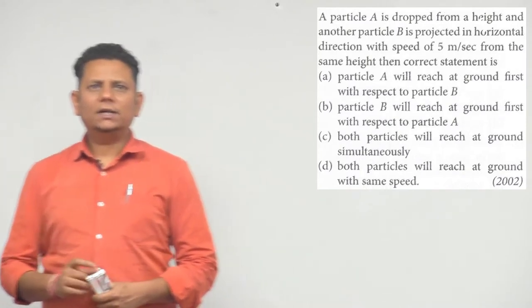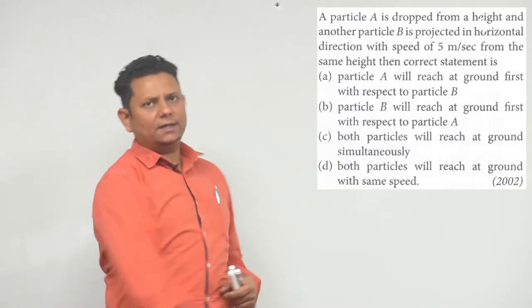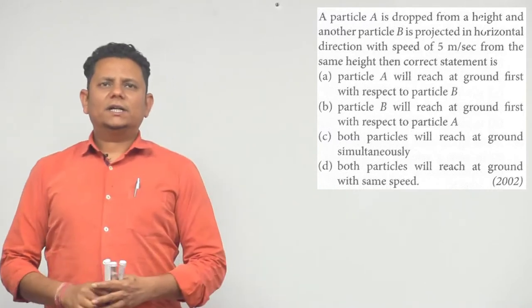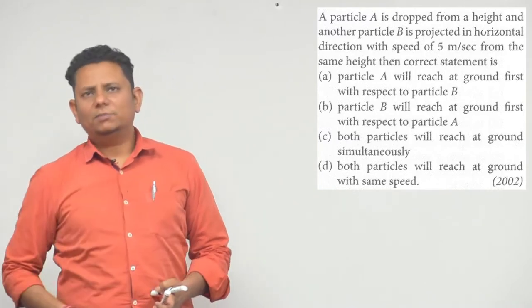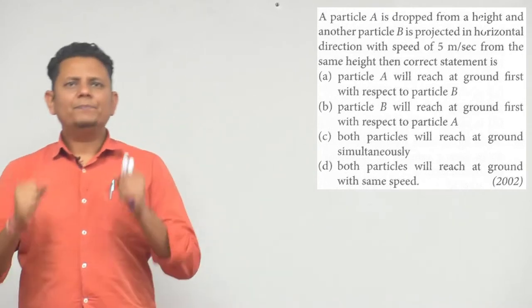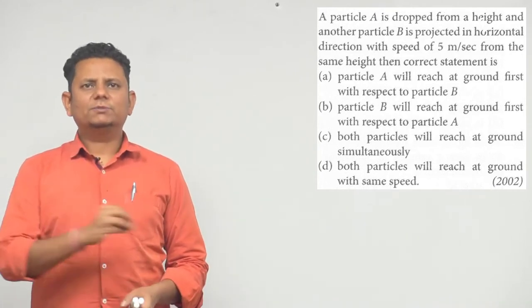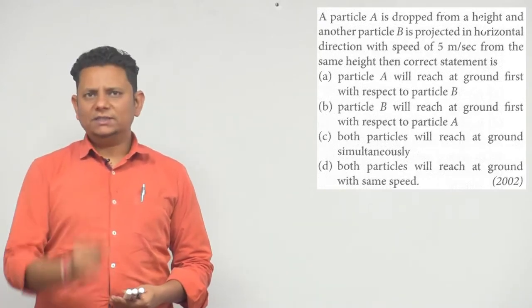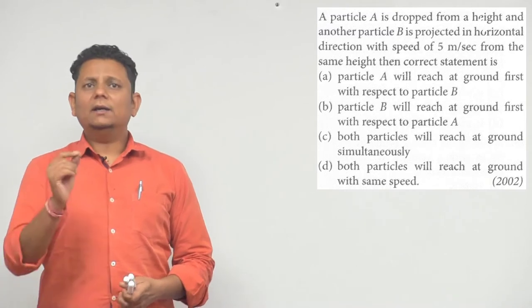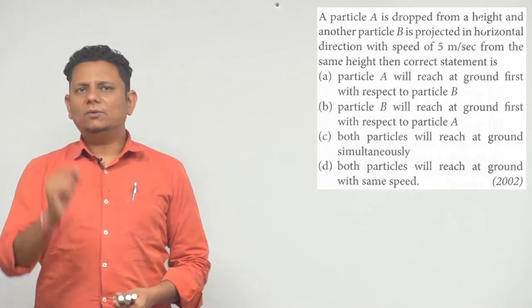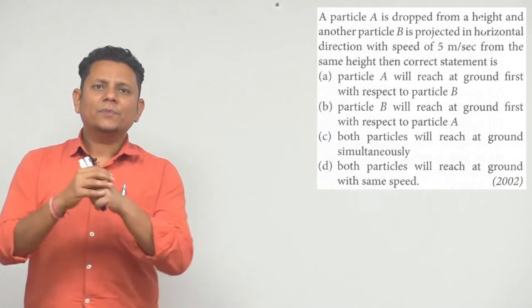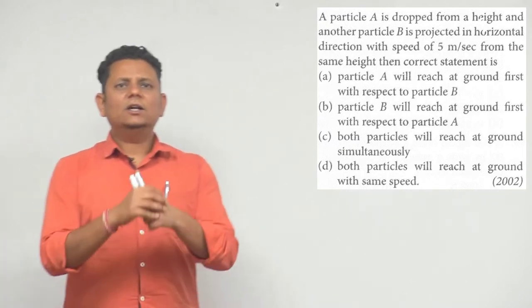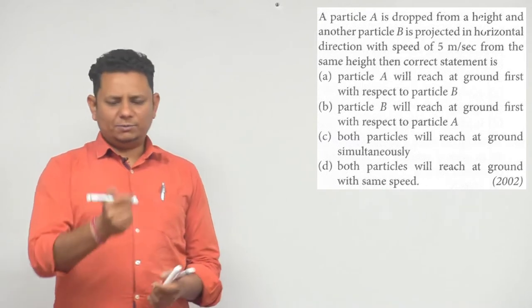Next question. A particle A is dropped from a height and another particle B is projected in horizontal direction with a speed of 5 meter per second from the same height. Four statements are given: (A) particle A will reach the ground first, (B) particle B will reach the ground first, (C) both particles will reach the ground at the same time or simultaneously, and (D) both particles will reach the ground with the same speed.